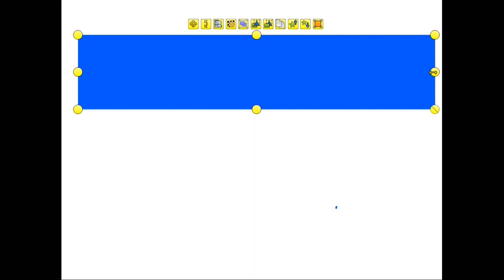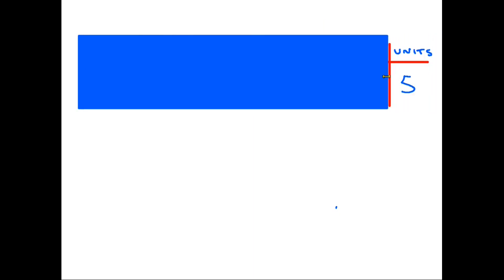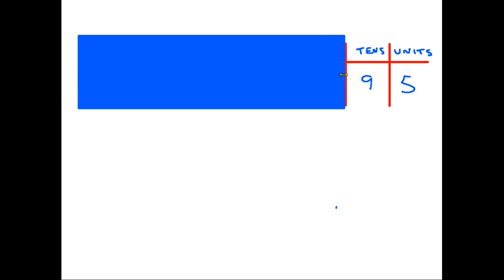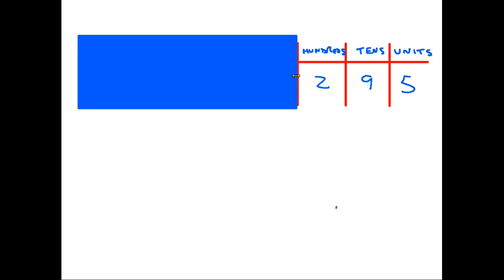If I cover the column names up for a moment and look at them one at a time: the first digit at this end is five — five is just units. If we add the next number on we have 95, which is nine tens and a five, so that column is indeed the tens. If we say those three digits out loud we get 295, so the two must be the hundreds.